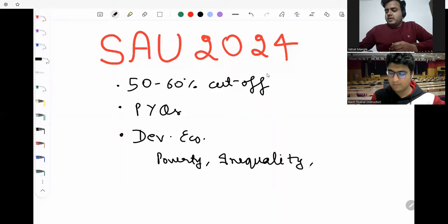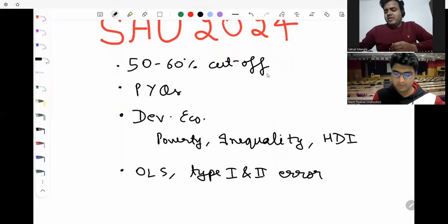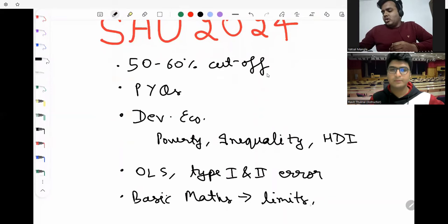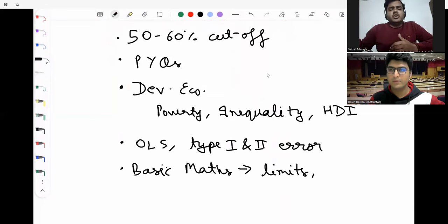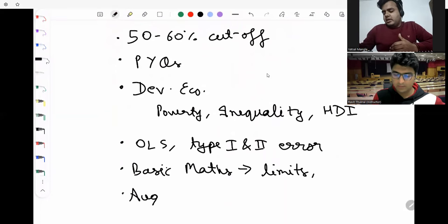For econometrics, they focus more on basic econometrics - OLS regression, Type I and Type II errors, all these sorts of things. Mathematics also, basic math is sufficient like basic linear algebra, eigenvalues, eigenvectors, basic calculus questions related to roots of equations, derivatives, limits. For macro, topics like Okun's law, Phillips curve. Last year they had a question on augmented Phillips curve.